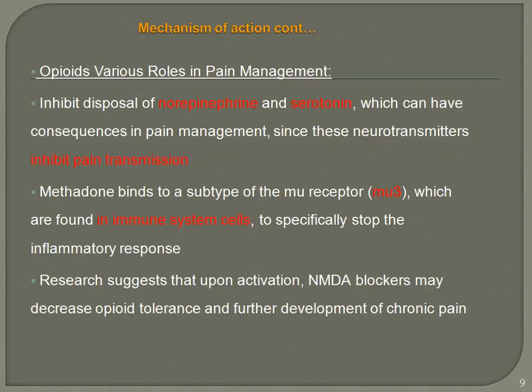Opioids play various roles in pain management. They inhibit the disposal of norepinephrine and serotonin, which inhibit pain transmission. Methadone binds to a subtype of mu receptor found in immune system cells. Research suggests that upon activation, NMDA blockers may decrease opioid tolerance and further development of chronic pain.